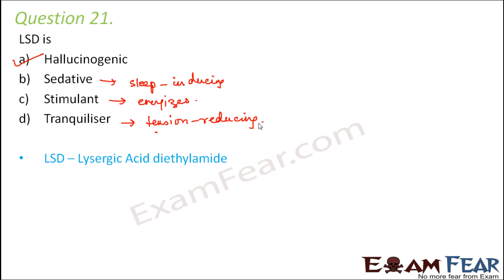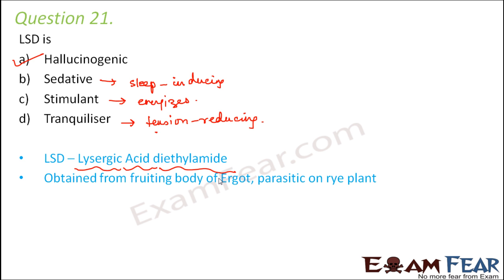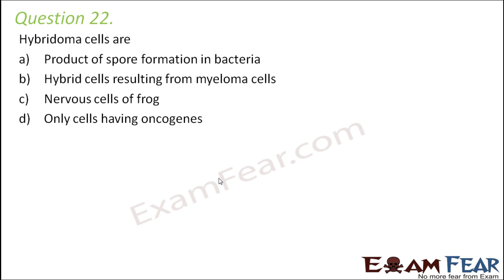The full form of LSD is lysergic acid diethylamide, and it is obtained from the fruiting body of ergot, a parasite on the rye plant.